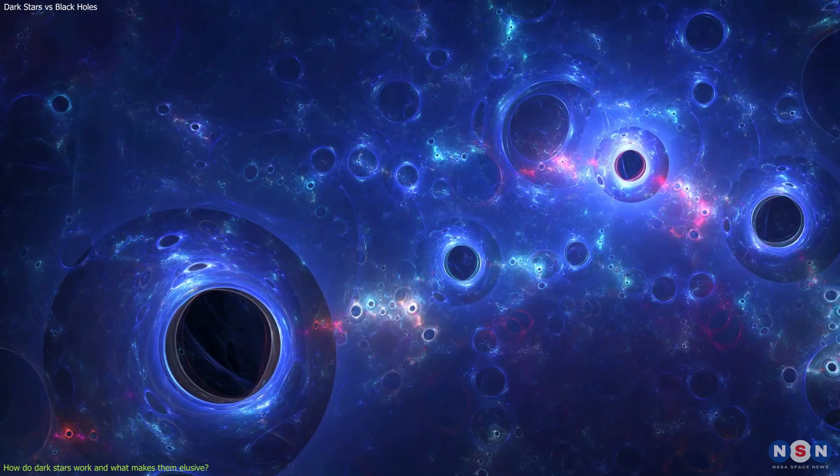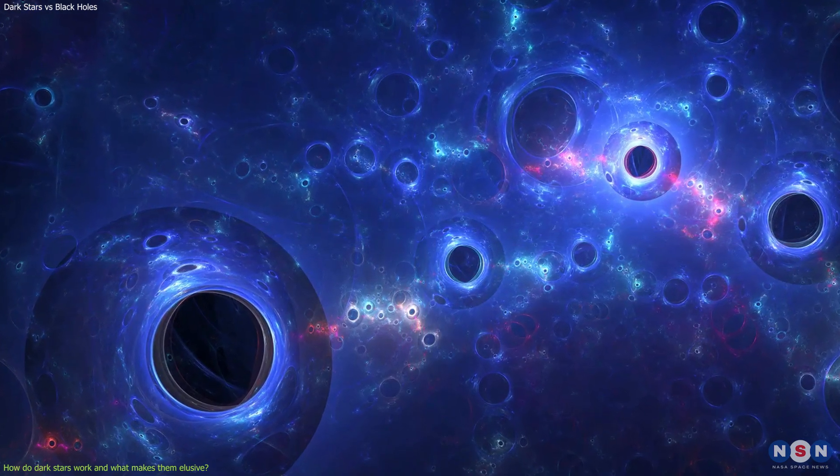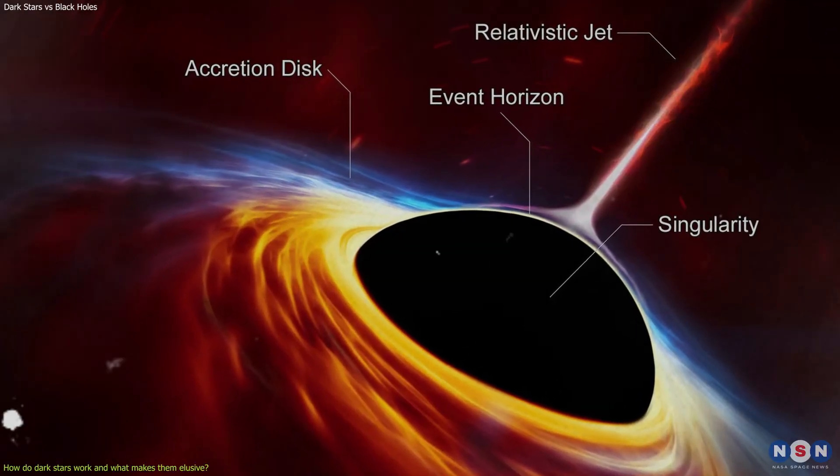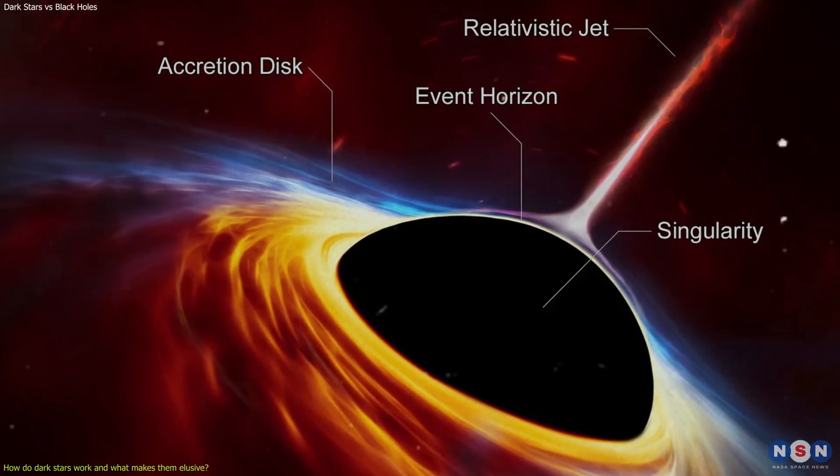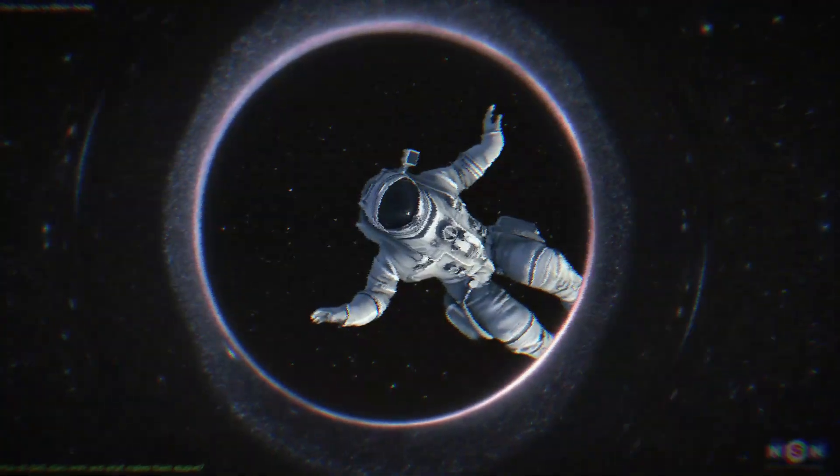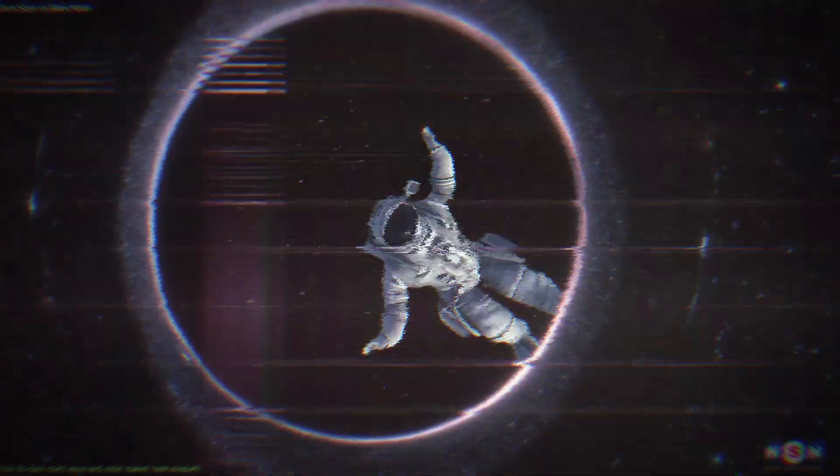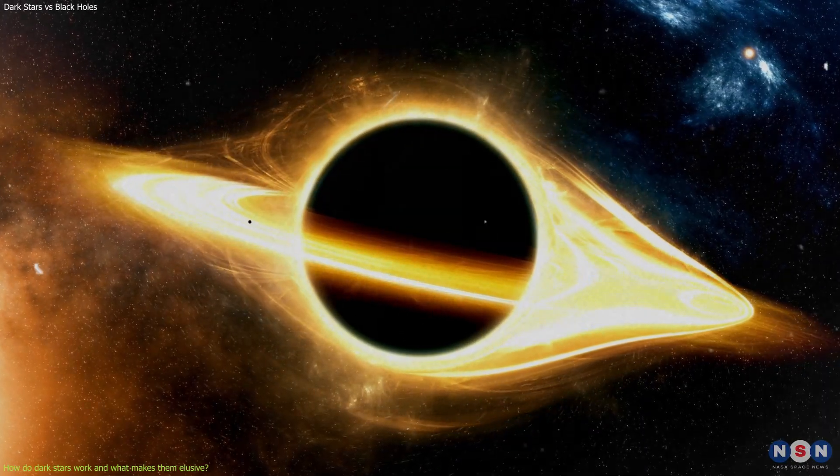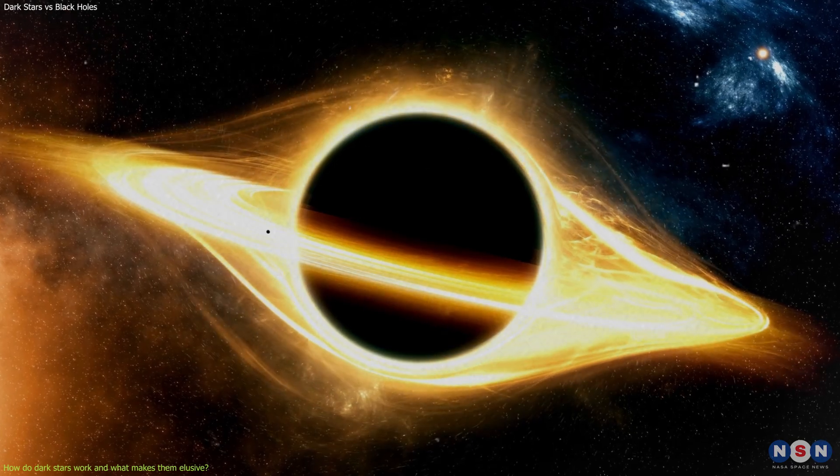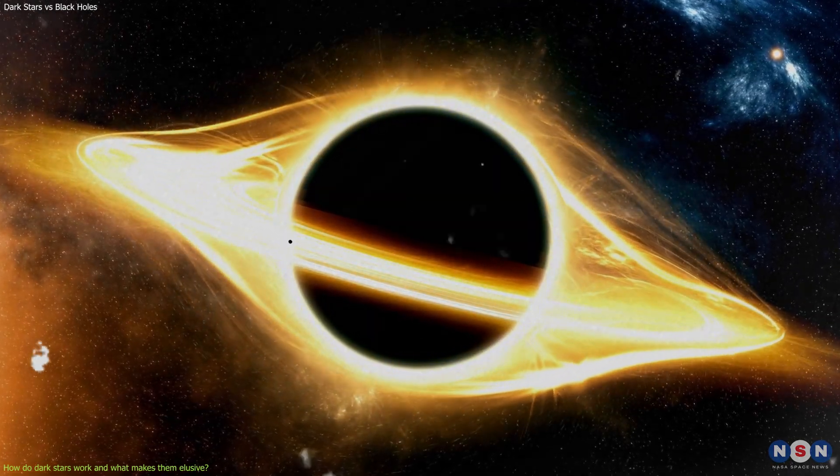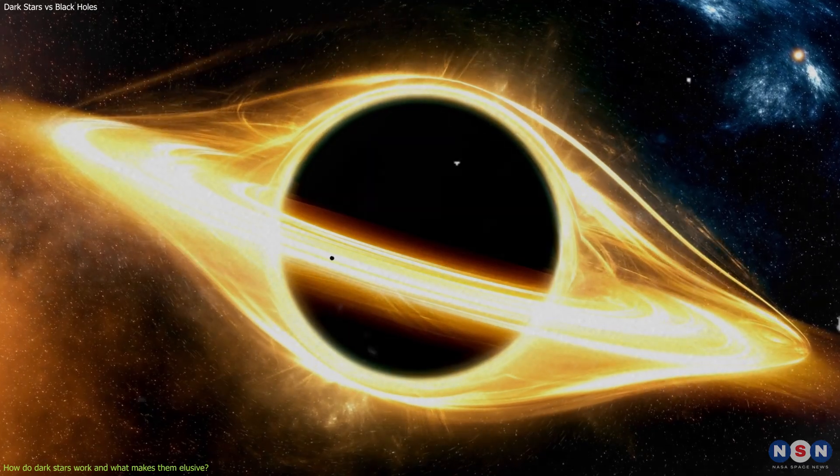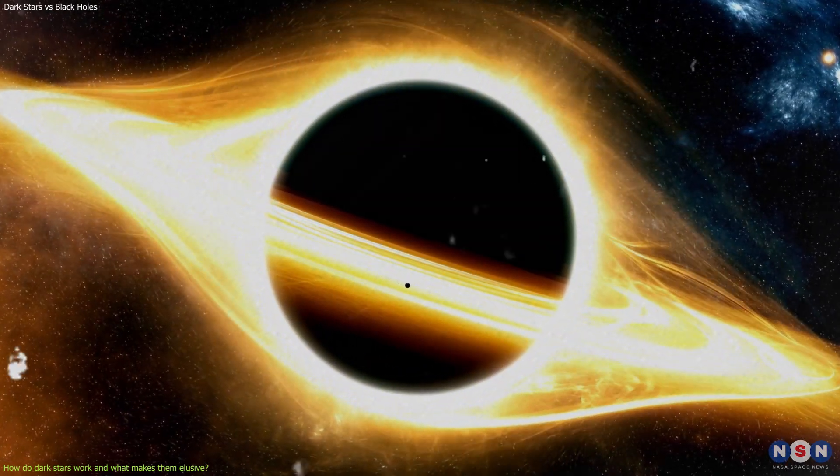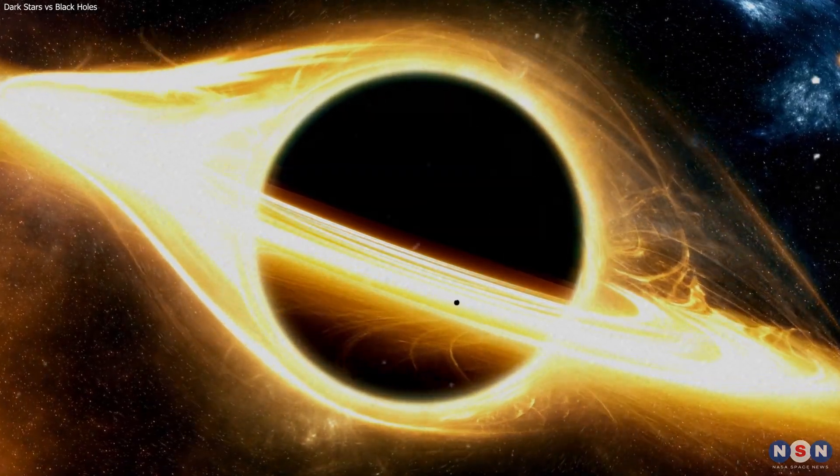Additionally, dark stars are very large and have a very large event horizon compared to their mass. The event horizon is the boundary that separates the inside and outside of a dark star. Anything that crosses the event horizon is doomed to fall into the Planck core and never come back. The size of the event horizon depends on the mass of the dark star. The more massive the dark star, the larger the event horizon. These are some of the main features and phenomena associated with dark stars that make them unique objects in the universe.